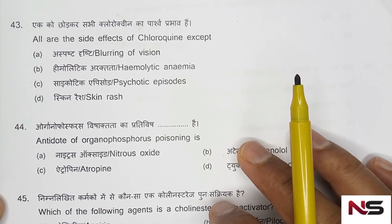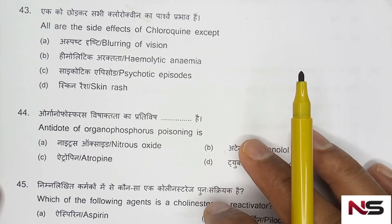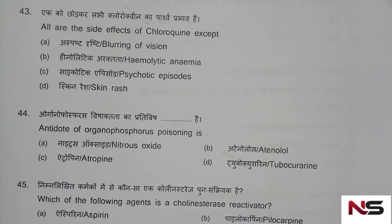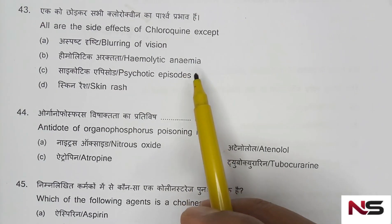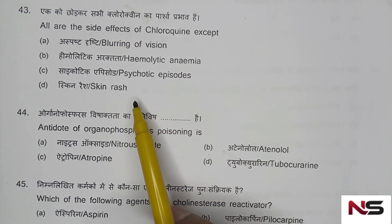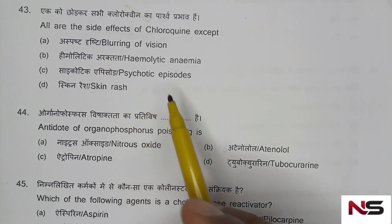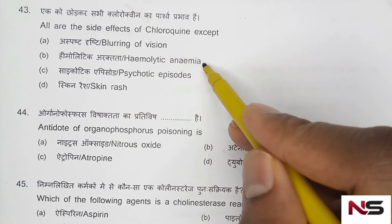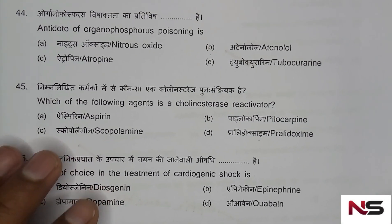Question 43: All are side effects of chloroquine except — options are: blurring of vision, hemolytic anemia, psychotic episodes, skin rashes. The correct answer is option B — hemolytic anemia is not a side effect of chloroquine.